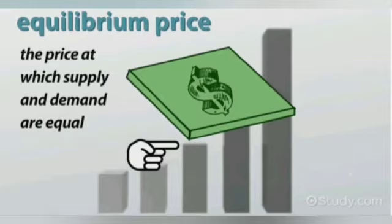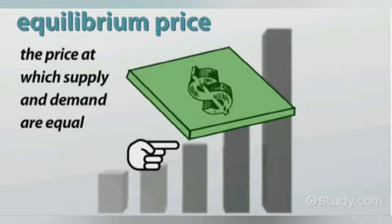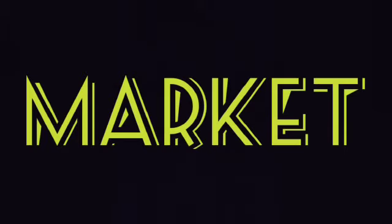The equilibrium price is the price at which quantity demanded equals quantity supplied. Competition among the buyers and sellers ensures that the price is ultimately settled at the equilibrium level.